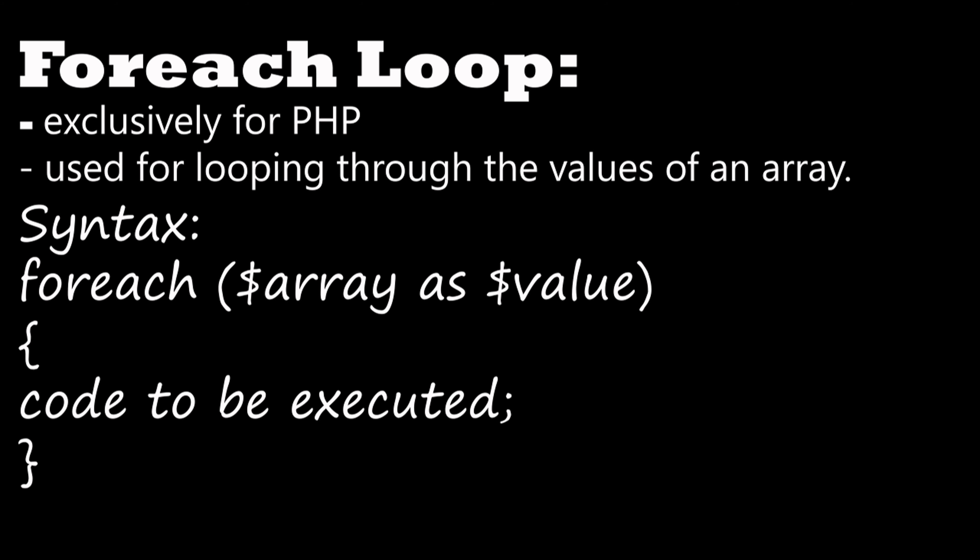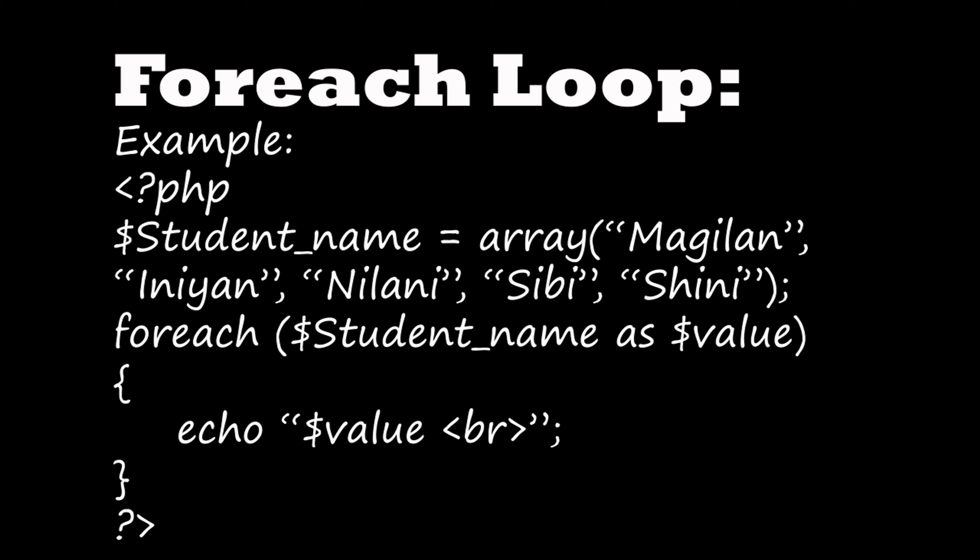For a single variable we use for loop; for an array we use for each loop. In the for each example: the PHP tag is opened, then student_name = array('Magli', 'Nini', 'Nalini', 'Nilani', 'Sibi', 'Shini'). Then the for each loop is written as foreach(student_name as value), and inside the bracket, the statements to be displayed are written, then the PHP code is closed.